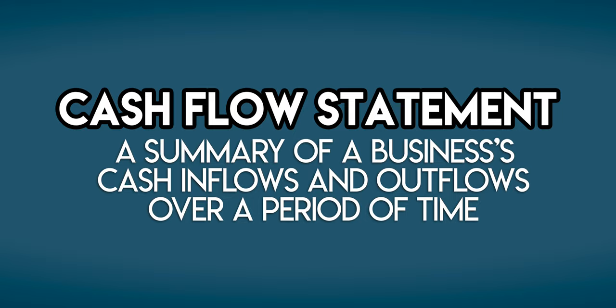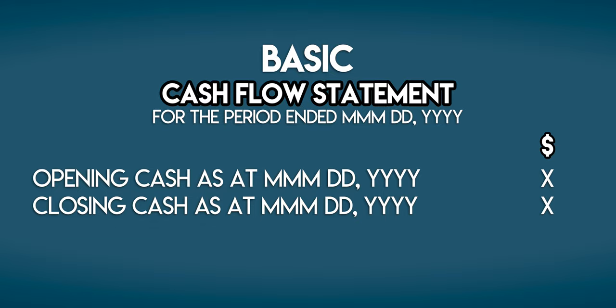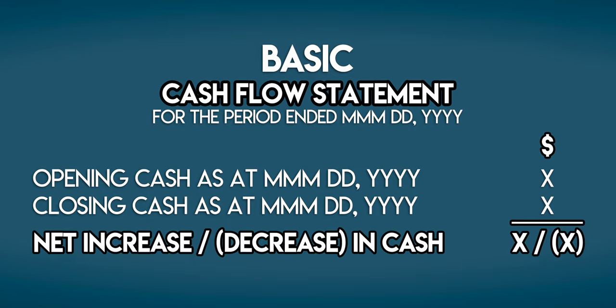What is a cash flow statement? At the start I said it summarises a business's cash inflows and outflows over a period of time — but what does it look like? We begin with the opening cash amount at the start of the period and compare it against the closing cash amount at the end of the period. You can find both of these numbers in the balance sheet. The movement between the two is the net increase or decrease in cash, and once we know that we can get onto the real purpose of the cash flow statement: explaining how we ended up here.